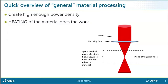Before we discuss micro material processing, let's quickly touch on regular material processing. Basically we're doing something to a material — cutting, drilling, welding, marking, whatever it may be. We start with a laser beam of appropriate power and wavelength, bring it down to a focus, creating a space within which the power density — watts per square centimeter — is high enough to do the work. The beam might be CW or repetitively pulsed depending on the application.